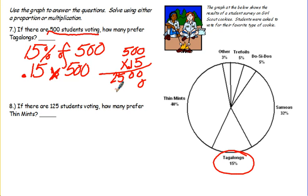And multiply that out. Drop a 0. Don't forget to put in your decimals. Two decimal places in the question. So two decimal places in the answer. So 75 students would prefer tag-alongs out of 500 students.